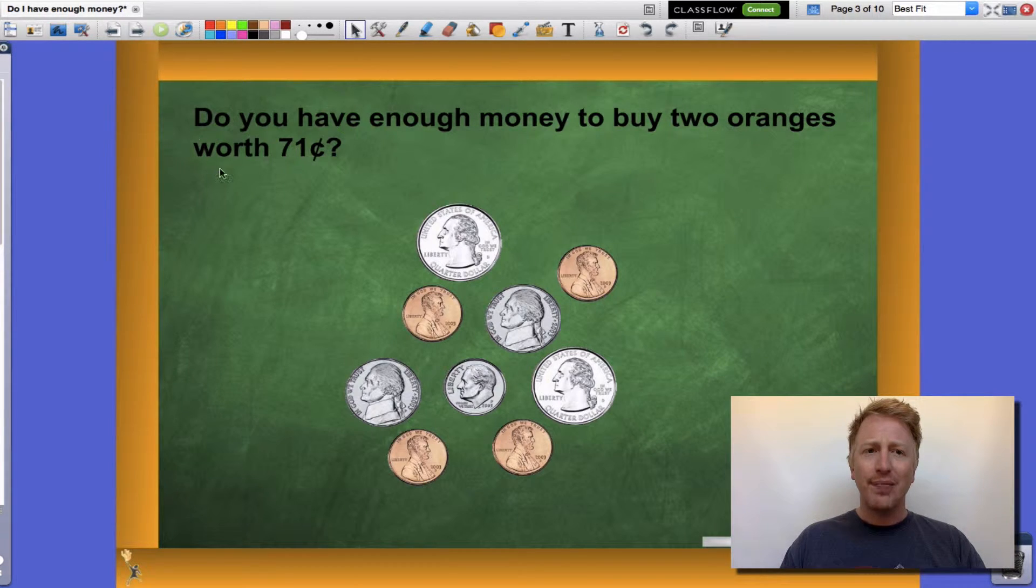So let's get started. Do we have enough money to buy two oranges worth 71 cents? Well I have a bunch of different coins here, a combination of them.